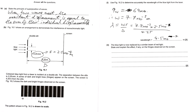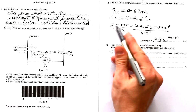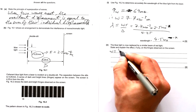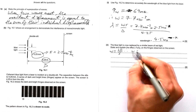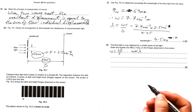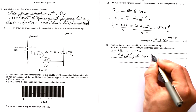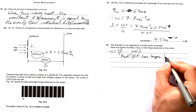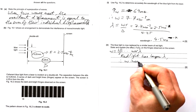Part two: the blue light is replaced by a similar beam of red light. Fringe width equals λD/S, so fringe width is proportional to wavelength. Red light has a longer wavelength, therefore fringe width increases.